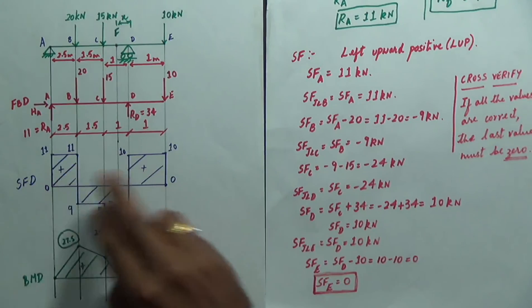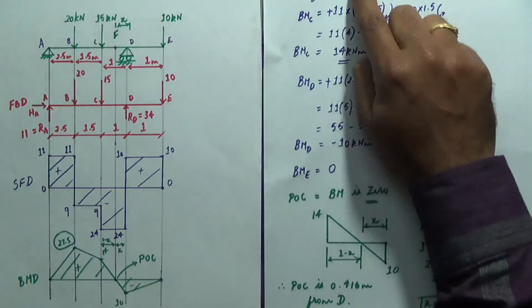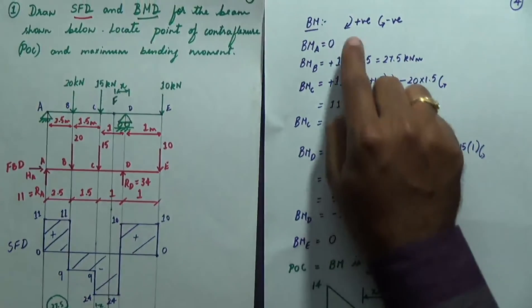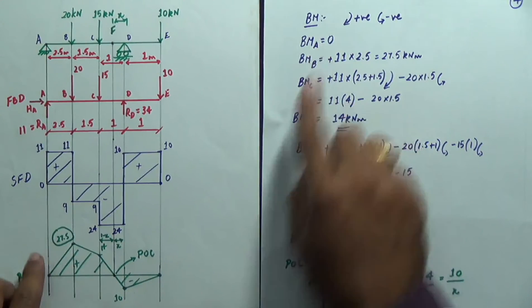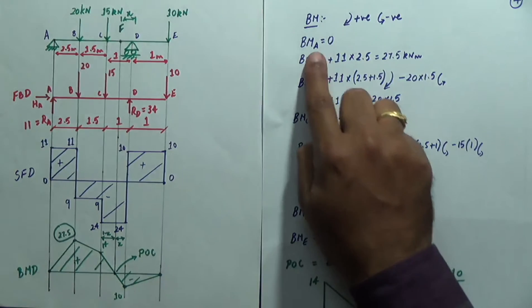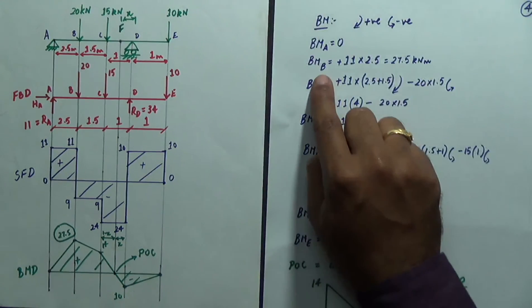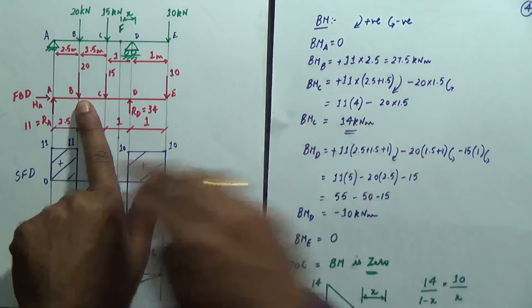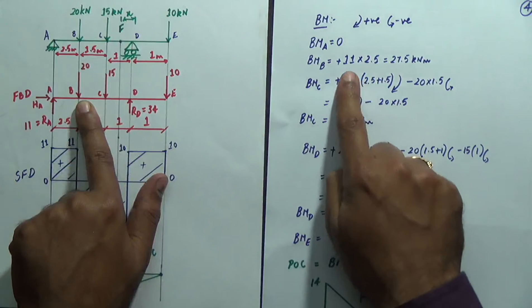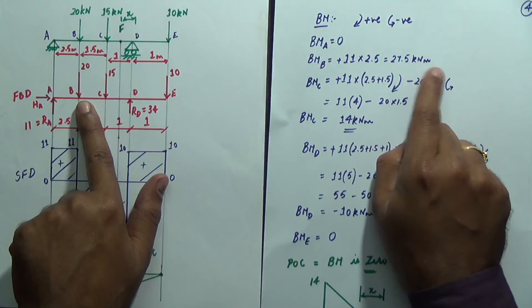Now plot the shear force diagram, marking positive and negative regions with hatching. Next comes bending moment. The sign convention for bending moment is clockwise positive, anti-clockwise negative. Bending moment at the extreme ends are zero: BM at A = 0 and BM at E = 0.